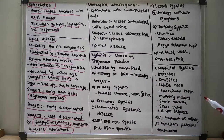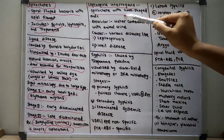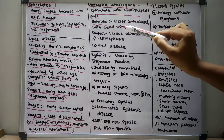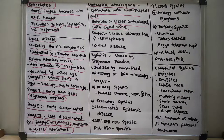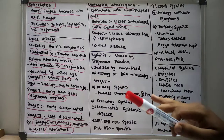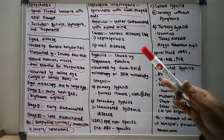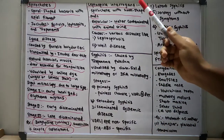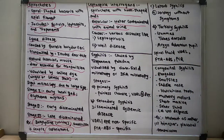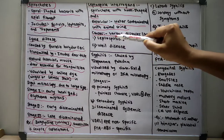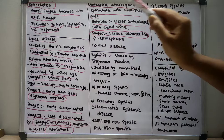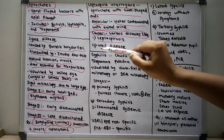Now let us talk about Leptospira interrogans. Leptospira interrogans is a spirochete with hook-shaped ends. The reservoir of this bacteria is water contaminated with animal urine. When infected animals contaminate water sources with urine, the water becomes a reservoir, and ingesting this water leads to contracting the bacteria. Leptospira interrogans causes leptospirosis and Weil's disease.